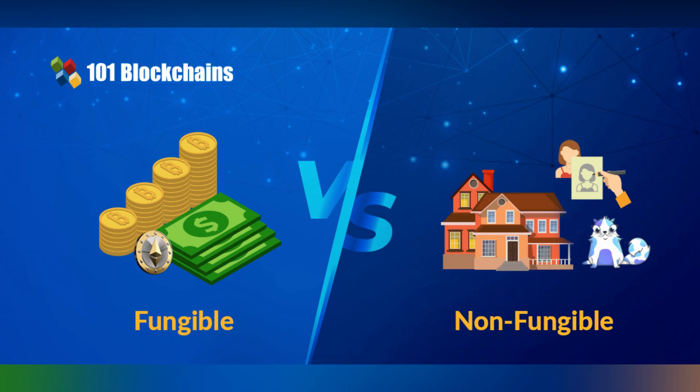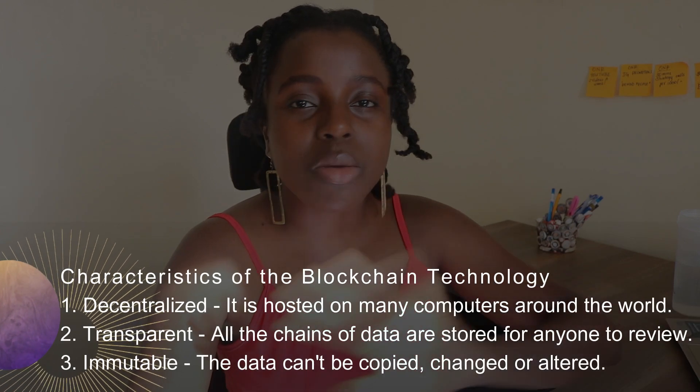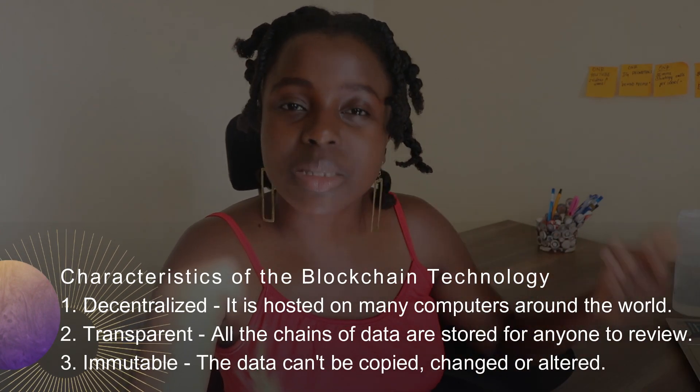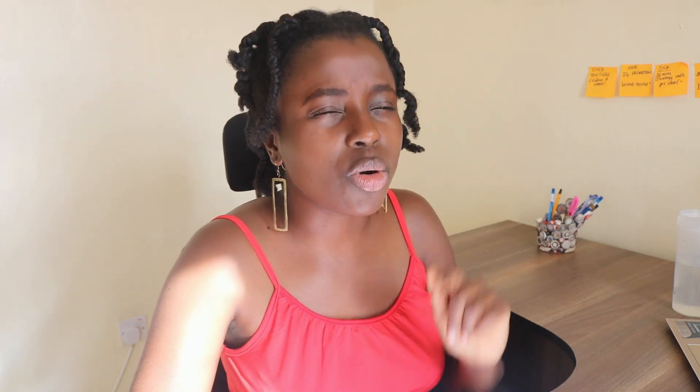NFTs are sold from a blockchain technology — not just anywhere. The blockchain technology is decentralized, meaning it exists across many computers in the world, not centralized like a bank. It is transparent because it records all the transactions that happen on it. And immutability means any transactions on the blockchain cannot be copied, changed, altered, or affected in any way.